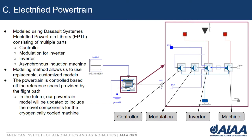Next, we are going to look at the electrified powertrain. We used the DeSalt Systems electrified powertrain library, which consists of multiple parts. We are going to look at the controller modulation method for the inverter, the inverter, and an asynchronous induction machine. Another benefit of using Modelica is that we can use replaceable customized models. So right now we're just using a baseline model, but as we develop the novel components with the Cheetah system — specifically the cryogenically cooled machine — we can replace the machine model easily with a customized model incorporating those cryogenic equations.